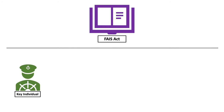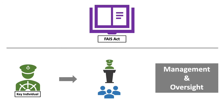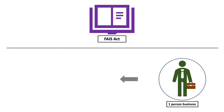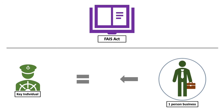Next, we have Key Individuals, or KIs for short, who are employed by FSPs to ensure compliance with the FACE Act. They are responsible for the management and oversight of the business. Every FSP must have someone fulfilling the role of a key individual. For one-person businesses, the owner will be both the FSP and the key individual.